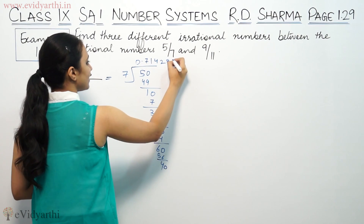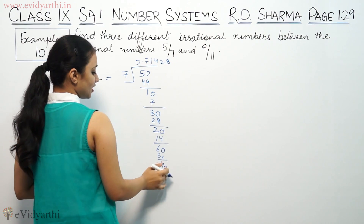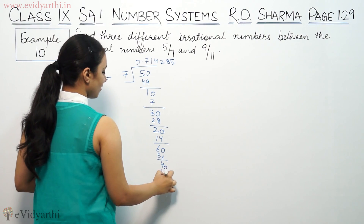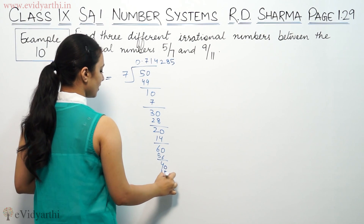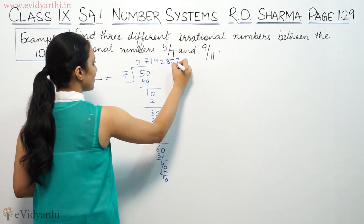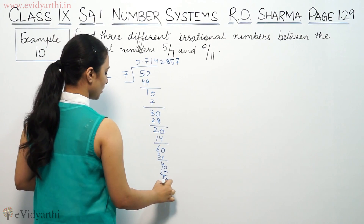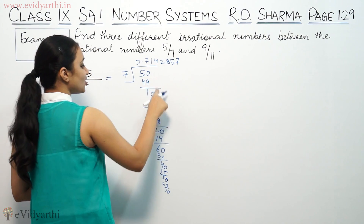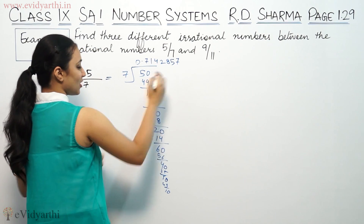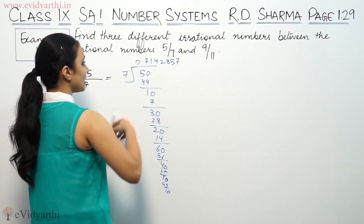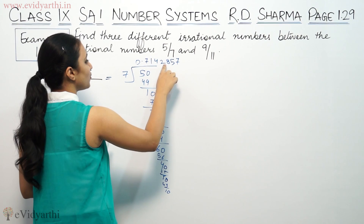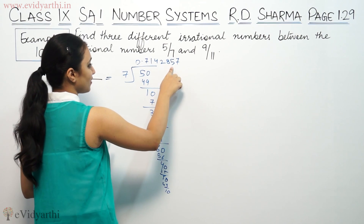Continuing the division: 7 into 5 is 35, and 7 into 7 is 49. So 5 by 7 gives us 0.714285. Now let's look at 9 by 11.